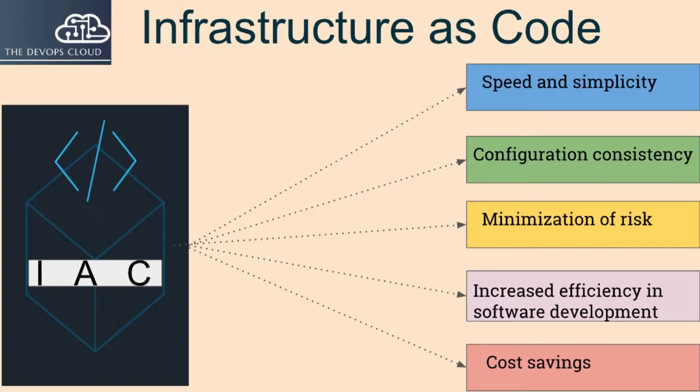Increased efficiency in software development: Infrastructure as Code allows your company to use continuous integration and continuous deployment techniques while minimizing the introduction of human errors after the development stage. Cost savings: Automating the infrastructure deployment process allows engineers to spend less time performing manual work, and more time executing higher value tasks.